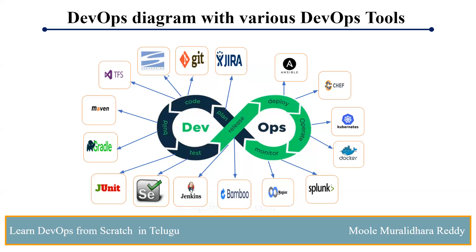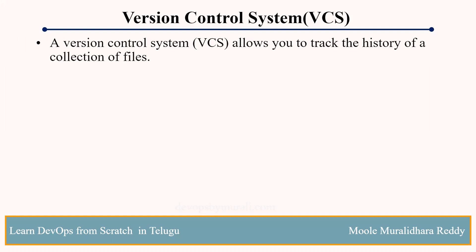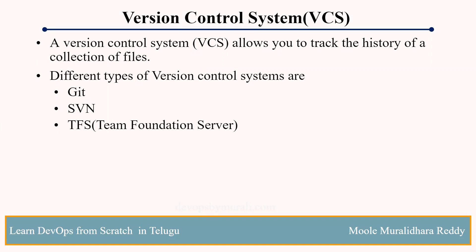In the next part of the course, we will go through DevOps tools one by one. First, version control system — it is used to manage source code, push and pull code, and track versions. Different types include Git, SVN (Subversion), and TFS (Team Foundation Server, managed by Microsoft). In this course, we will focus on Git and discuss it in depth.